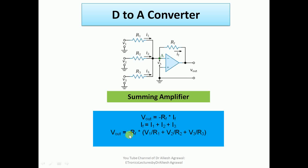If the input comes on the inverting terminal, the final output is reversed — it is phase shifted. The fundamental concept: V_output equals minus RF into IF, because the signal comes onto the negative terminal. RF is the feedback resistance — the output is connected back to the input — and IF is the current through it. With three inputs V1, V2, V3 connected via resistors R1, R2, R3, currents I1, I2, I3 flow and sum to generate IF, which is why it is called a summing amplifier.